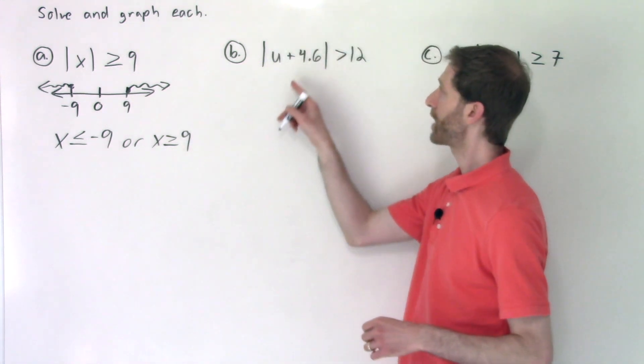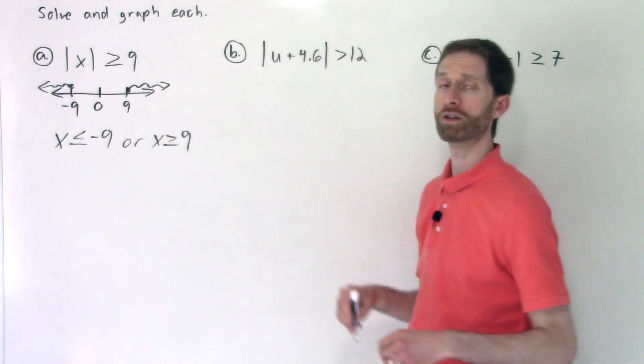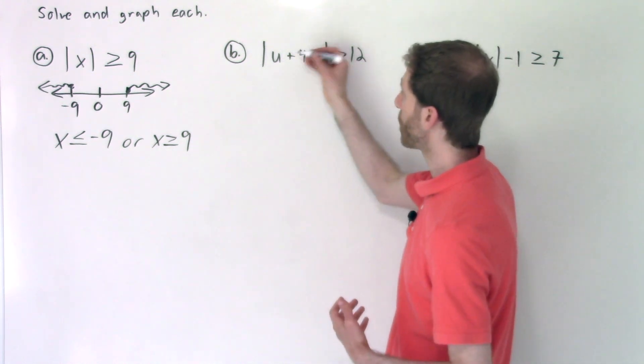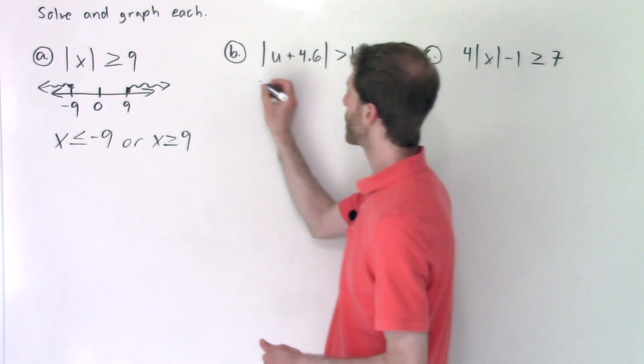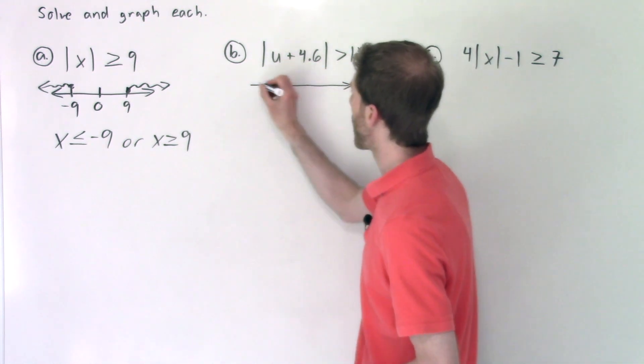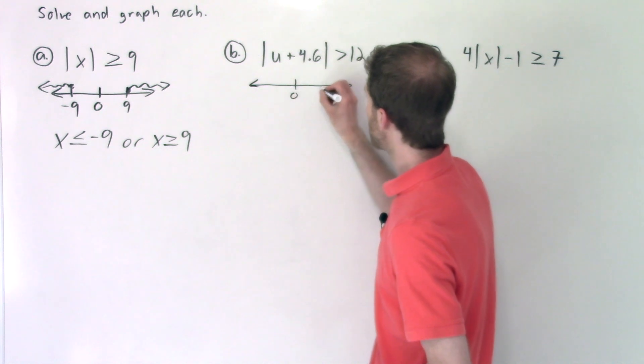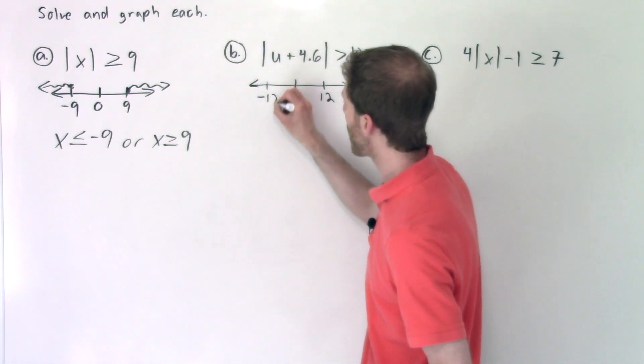So here we've got the absolute value of U plus 4.6 is greater than 12. That means that U plus 4.6, all of that is a distance of more than 12 away from zero. So again, I visualize it or draw out the actual graph. And if we're a distance of more than 12 away, that's 12 in either direction.